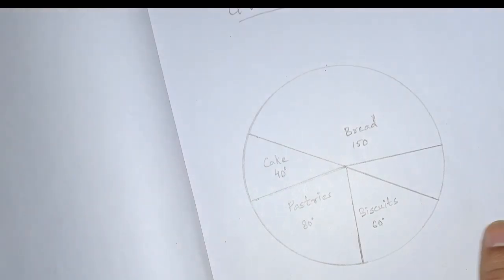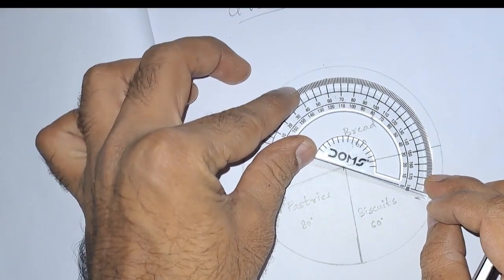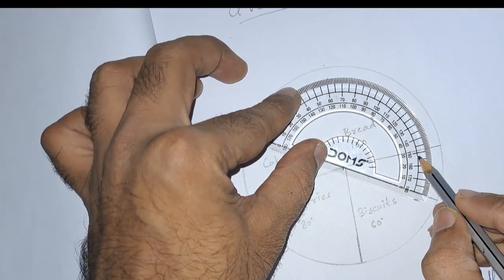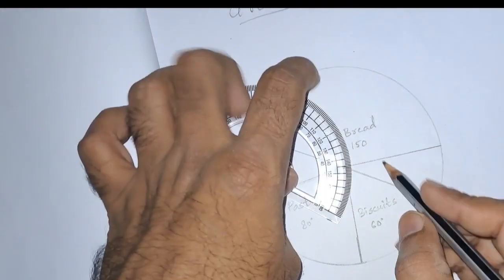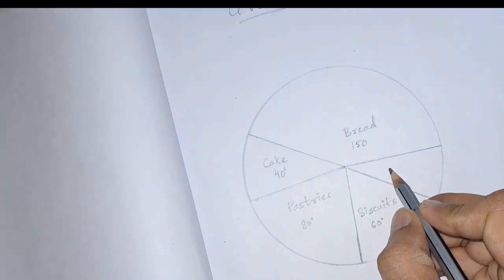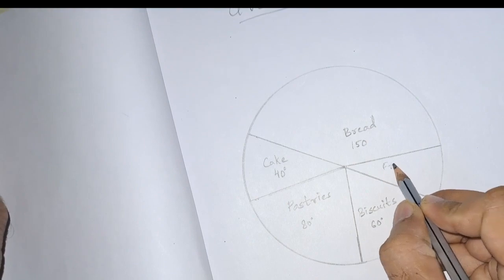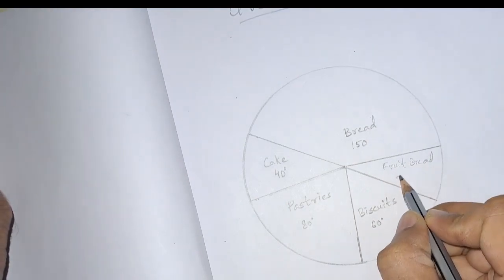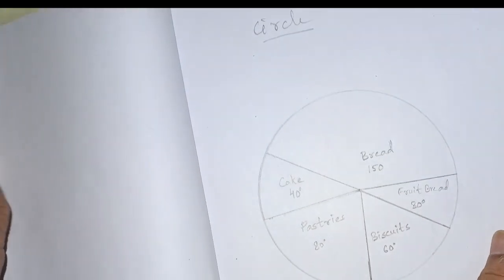Next, the remaining part is of 30 degrees. It is approximately 30 degrees. What is that? Fruit bread. Fruit bread, 30 degrees. Now it is completed.